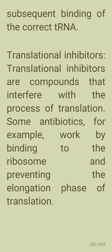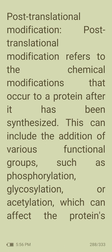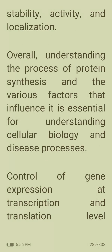Translational inhibitors are compounds that interfere with translation; some antibiotics, for example, work by binding to the ribosome and preventing the elongation phase. Post-translational modification refers to chemical modifications that occur to proteins after synthesis, including phosphorylation, glycosylation, or acetylation, which can affect the protein's stability, activity, and localization. Understanding the process of protein synthesis and the various factors that influence it is essential for understanding cellular biology and disease processes.